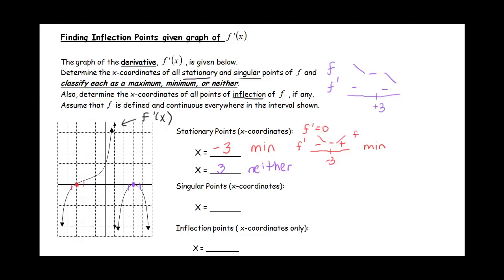For singular points, we look for where f prime does not exist. We can see a vertical asymptote at x equals 1, which is where f prime does not exist. To the left of 1, the y values are positive, so f prime is positive. To the right, f prime is negative. So the original graph is going up, then the slope is undefined, then it goes back down — so x equals 1 is a singular point and it's a maximum.